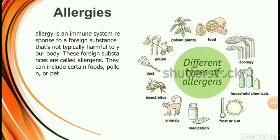Allergy is an immune system response to a foreign substance that is not typically harmful to the body. These foreign substances are called allergens. They can include certain food particles, pollen grains, or pet animals. Different kinds of allergens include food materials, ecological factors, household chemical substances, frost or sun, particular types of medication, pet animals, minerals, insect bites, dust particles, pollen grains, and some poisonous plants.